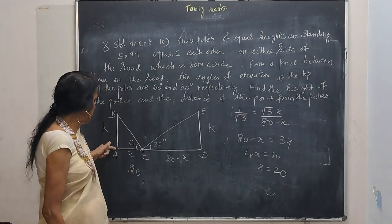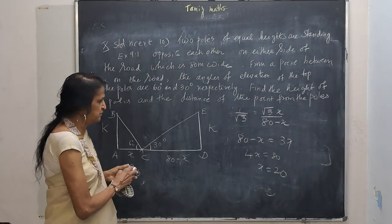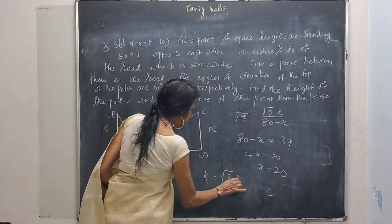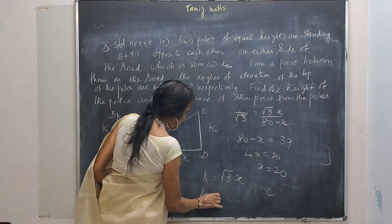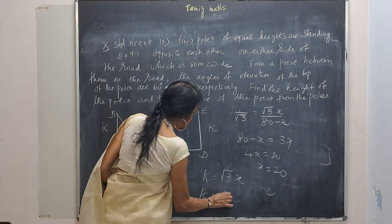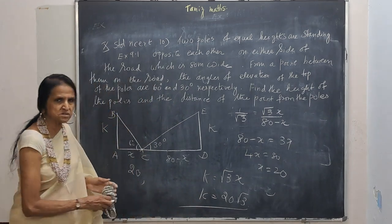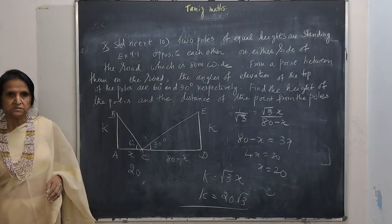Now he is asking what is the height of the pole? K. What is K? Root 3X. But what is X? 20. So K is equal to 20 into root 3. So this will be your answer. Okay? Thank you.